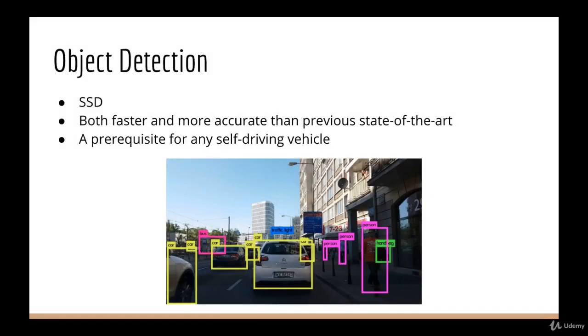The first of these systems is object detection. We'll be looking at a state-of-the-art algorithm called SSD. SSD is a real milestone in object detection because it is both faster and more accurate than the previous state-of-the-art. This is not just a nice computer science project, but a prerequisite safety requirement to any self-driving vehicle. You can imagine that if cars are going to be driving around safely, they need to be able to recognize all the objects around it and they need to do it fast.